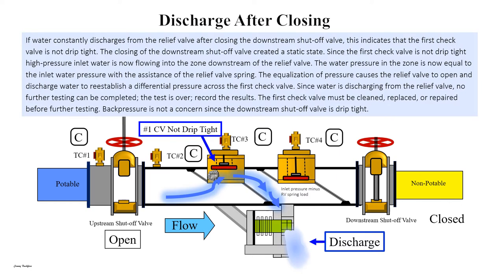Record the results. The first check valve must be cleaned, replaced, or repaired before further testing. Back pressure is not a concern since the downstream shutoff valve is drip tight.